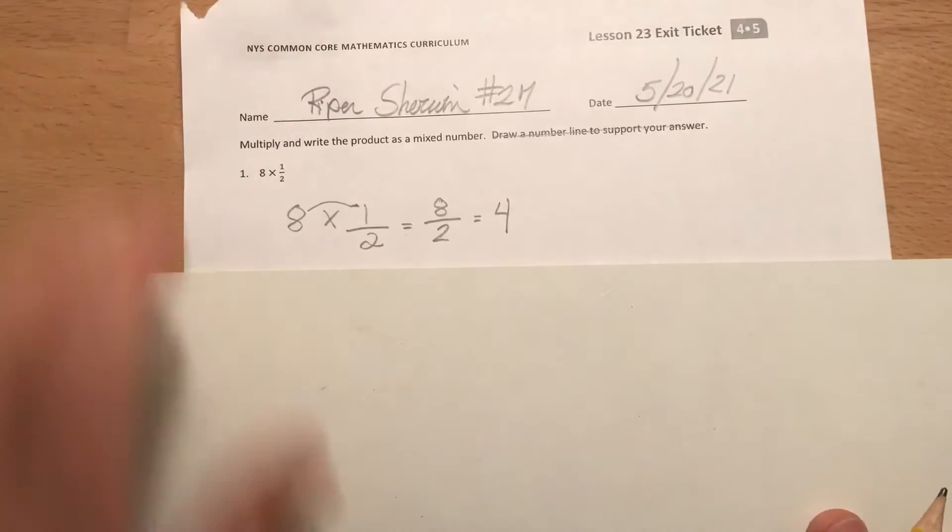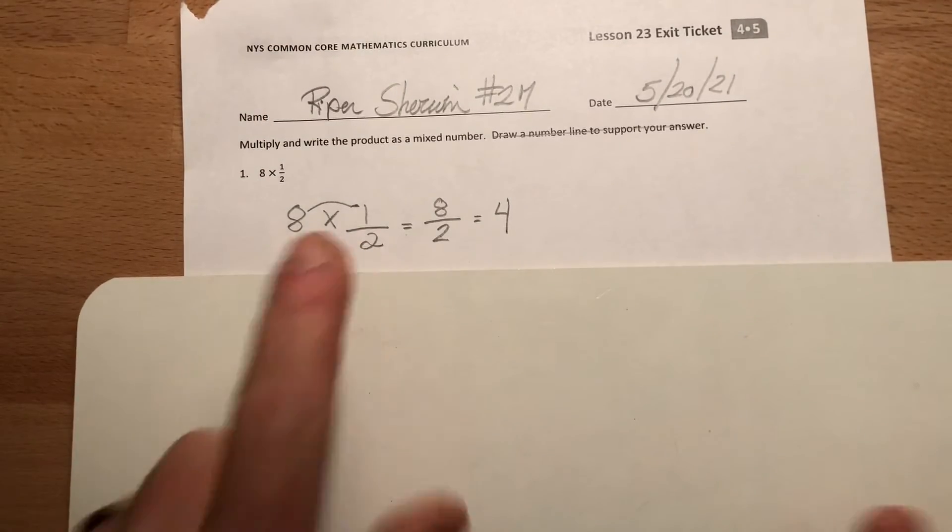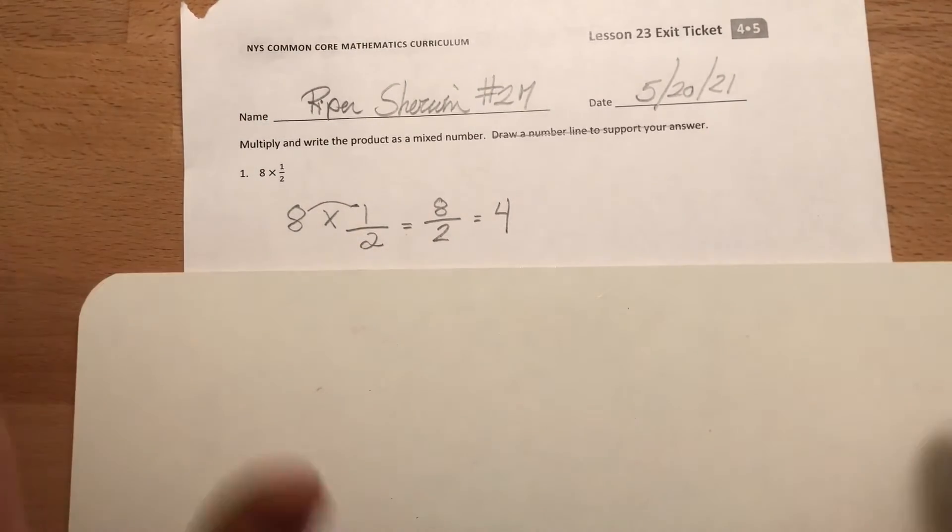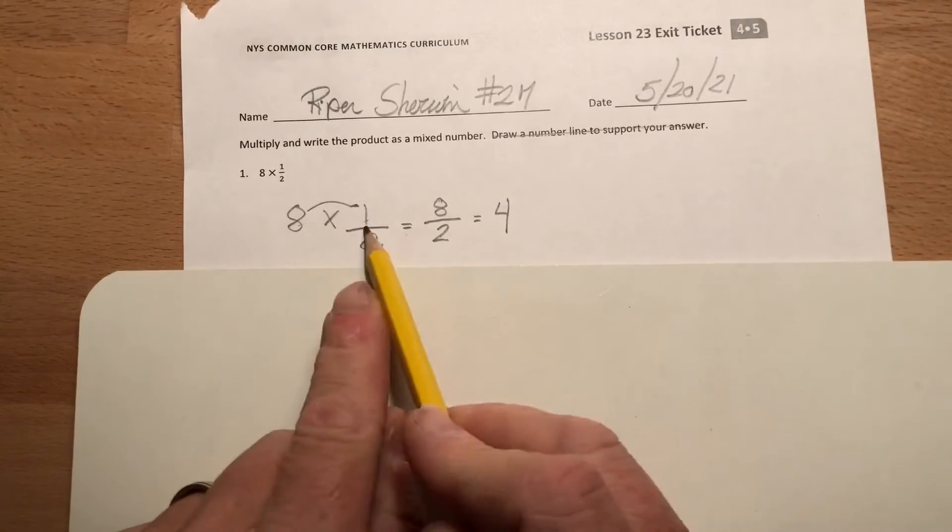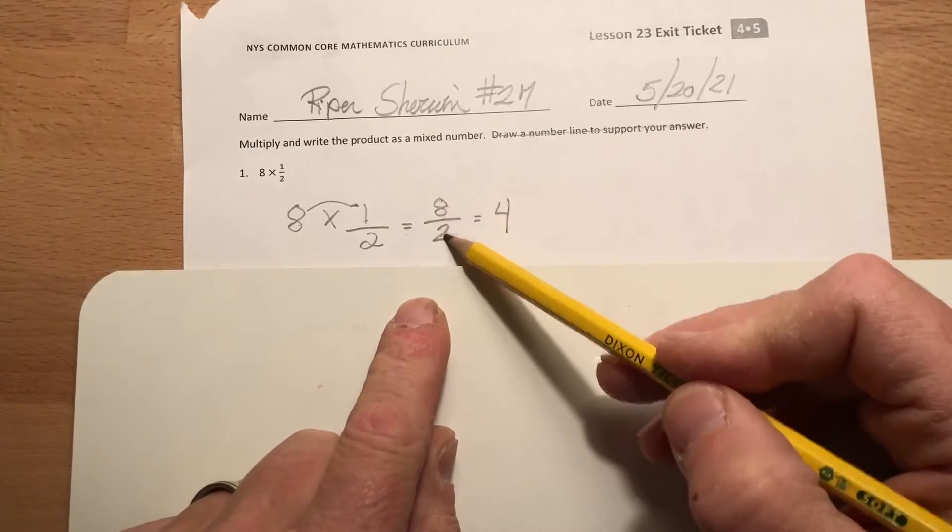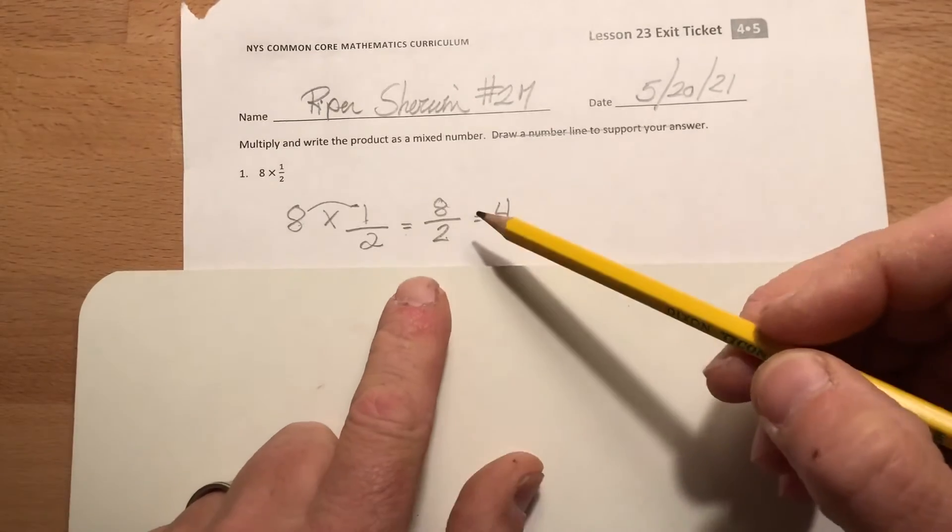All right, here we go. Eight times one-half, remember that's eight groups of one-half. What you could have done is written out one half eight times and added them all up. Or all I have to do is multiply eight times the numerator here. Eight times one is eight, and realize that's eight halves.